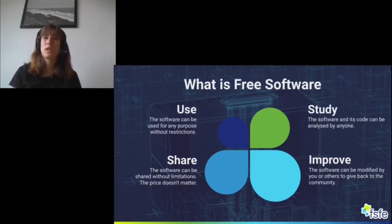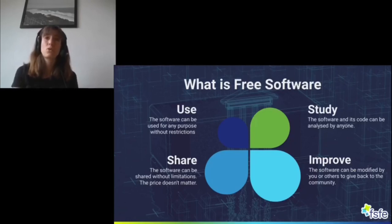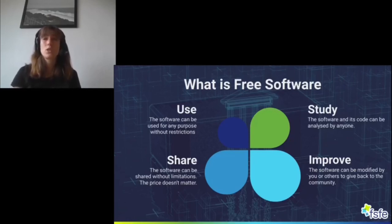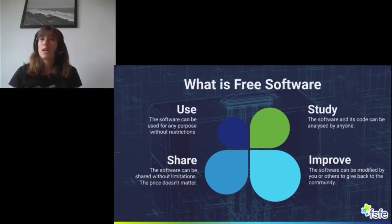To study means you can study the software and analyze how it works, look at the code, and understand what the software does. To improve means you can improve the software — this includes fixing bugs, but also modifying the software and adapting it to your specific needs. For example, you could add a feature to a software and adapt it to your specific situation.